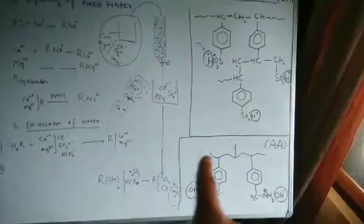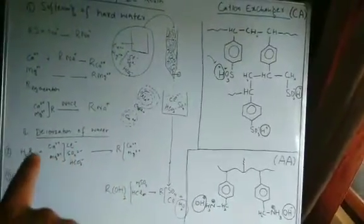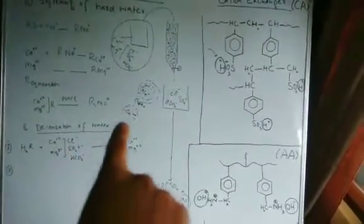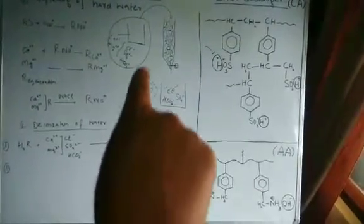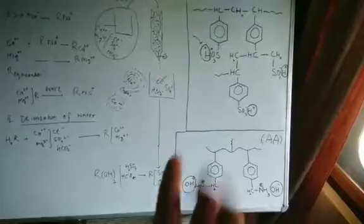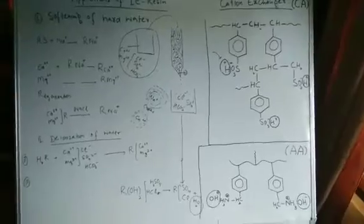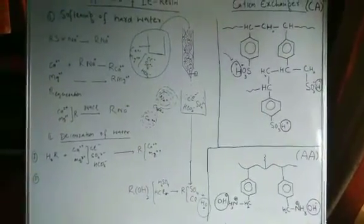For application two — deionization — we use the anion exchanger in the R–OH form. In step one, the H-form cation exchanger removes Ca2+ and Mg2+, and the effluent contains anions as acids. In step two, that water passes through the anion exchanger, replacing OH⁻ with the anions, and the water exits fully deionized. To regenerate: use NaOH for the anion exchanger column and HCl or H2SO4 for the cation exchanger column. That is all about the applications of ion exchange resin.